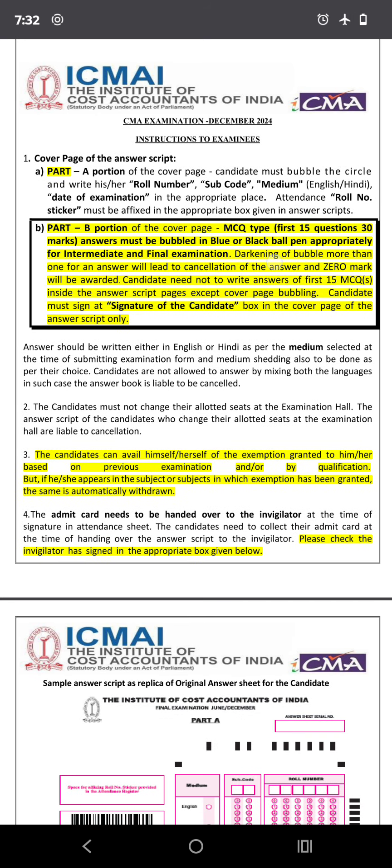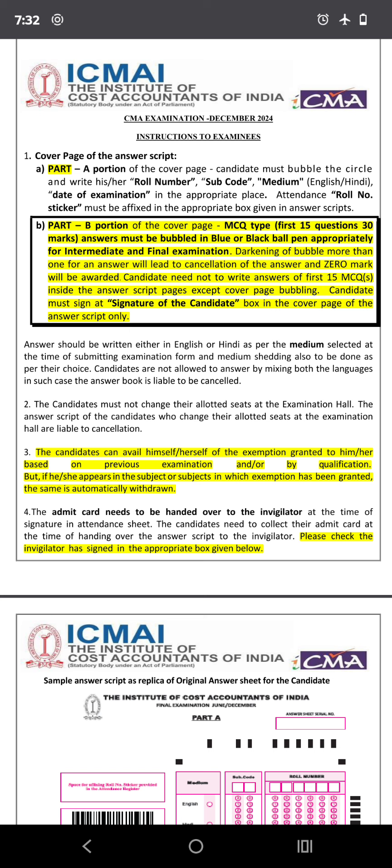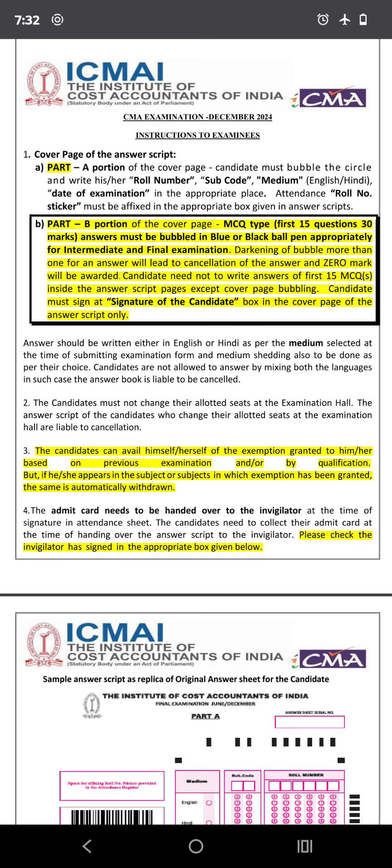Answers must be bubbled in a blue or black ballpoint pen. If you are writing in black pen, shade in black; if writing in blue pen, shade in blue. For Intermediate and Final examinations, darkening more than one bubble for an answer will lead to cancellation and zero marks. If shaded correctly, you get the mark; if wrongly shaded or wrong answer chosen, you get zero marks.